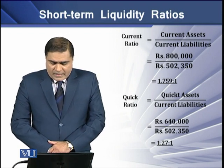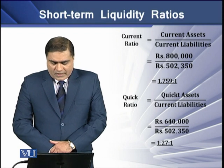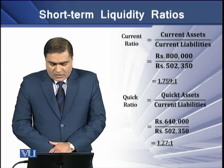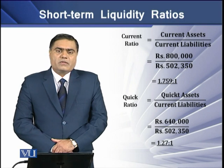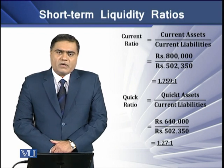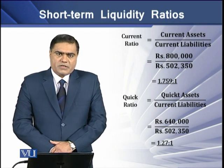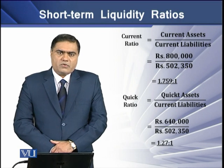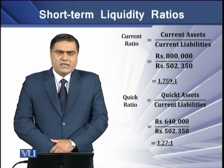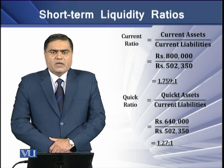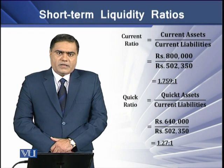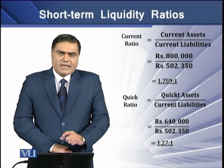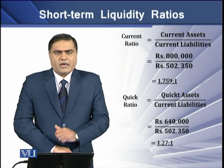If we divide quick assets by current liabilities, the answer using our data is 1.27. This means to pay off Rs. 1 of current liability, the firm has Rs. 1.27 of quick assets. In other words, quick assets are 27% in excess of the current liabilities.